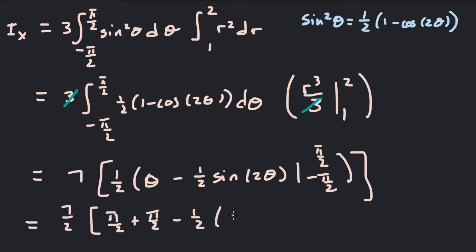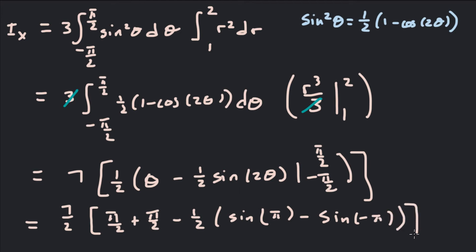Plugging in: sin(2 · π/2) = sin π = 0, and sin(−π) = 0, so those terms vanish. We're left with 7/2 times π, giving us Ix = 7π/2.